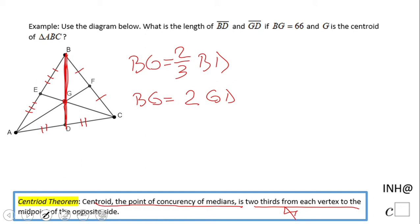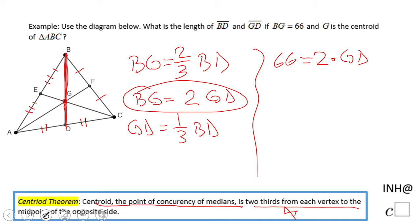Why? Because GD is one-third of BD. That's the reason we can use this relationship. If we notice BG is 66, we can find GD very fast by dividing by two.